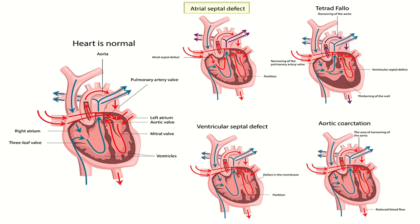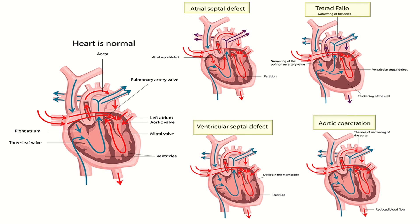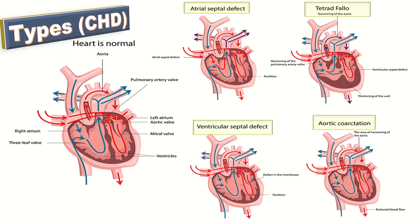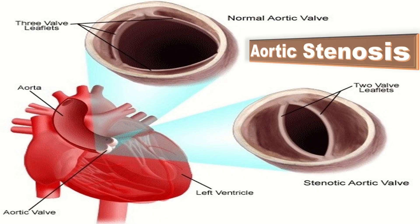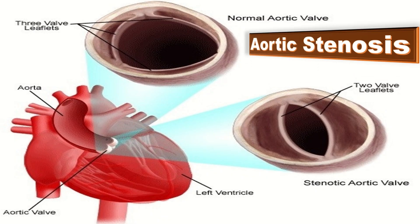Those congenital anomalies include atrial septal defect, tetralogy of Fallot, ventricular septal defect, and aortic coarctation. Here we can see aortic stenosis, a type of cardiac anomaly.